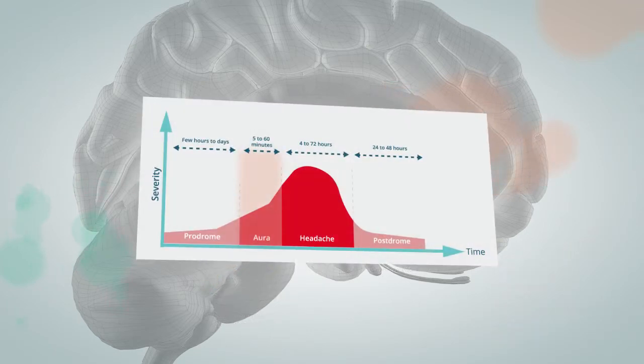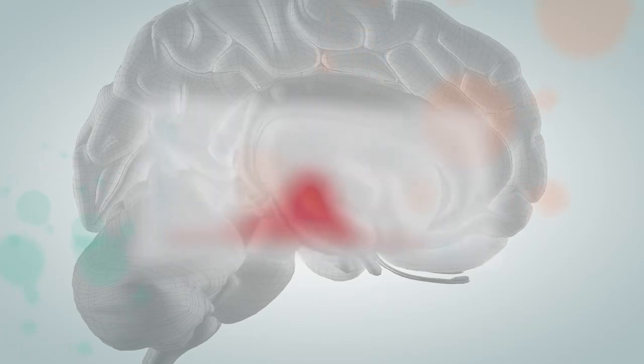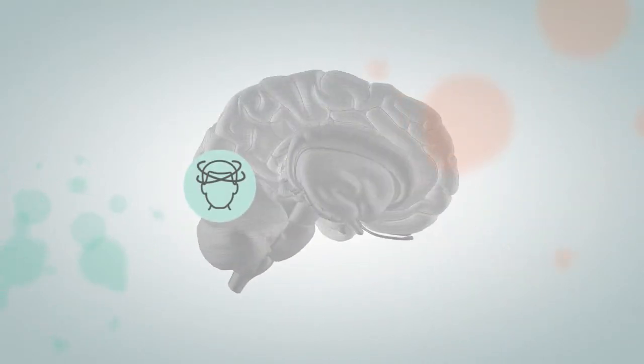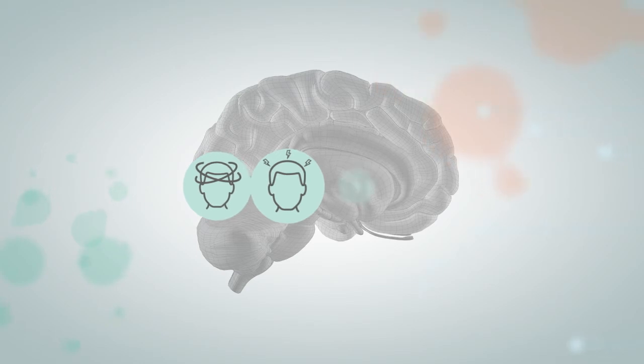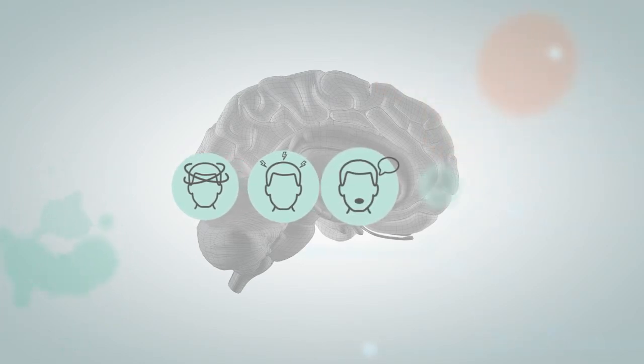Around one third of migraine attacks are preceded by aura. However, its clinical significance and underlying mechanisms continue to be debated. The most common aura symptoms are visual disturbances, however it can also cause sensory, speech, and motor disturbances.